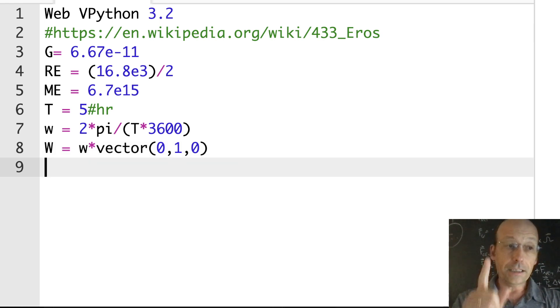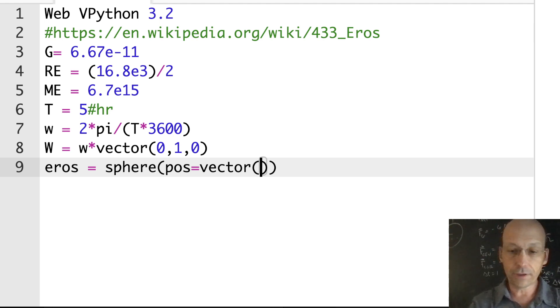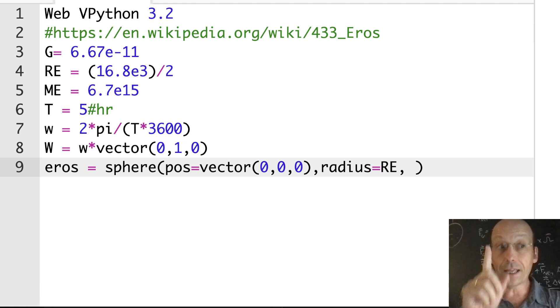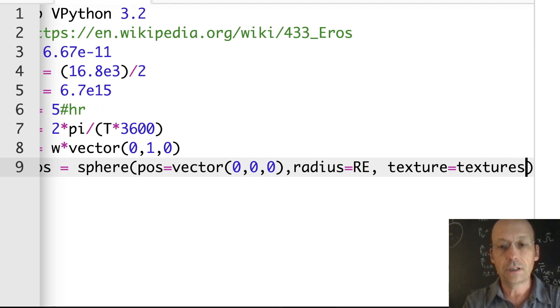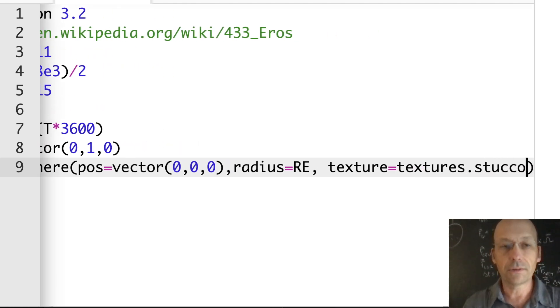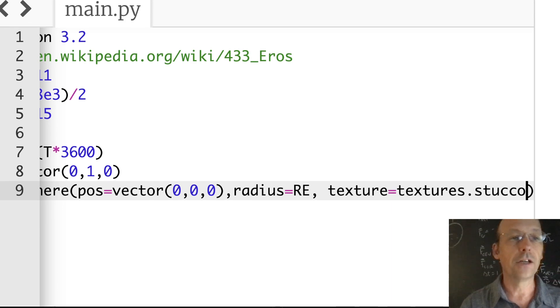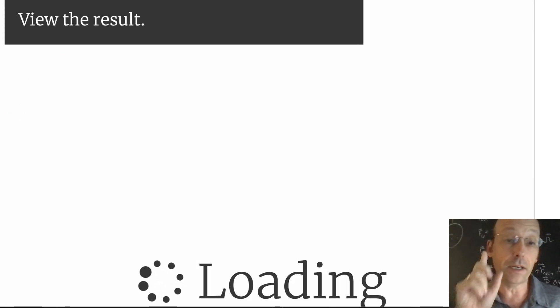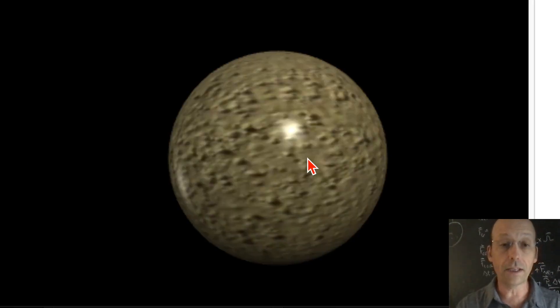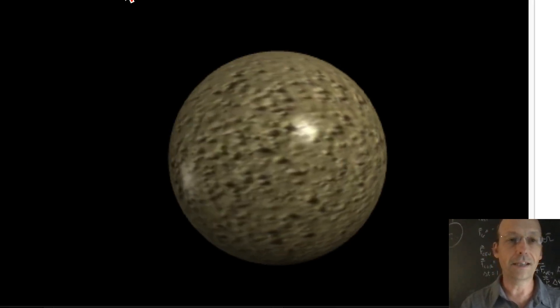Let's make Eros. Eros is a sphere, its position is the origin: vector zero, zero, zero. Radius is RE. And I'm going to give it a texture because when I rotate, I want to be able to see it rotate. So I'm going to do a trick: texture equals textures.stucco. Let's just run that and show you what it looks like. There's some built-in textures in VPython. Isn't that nice?